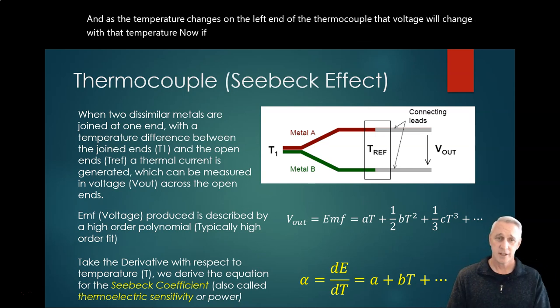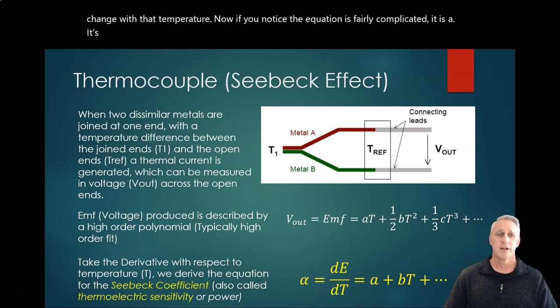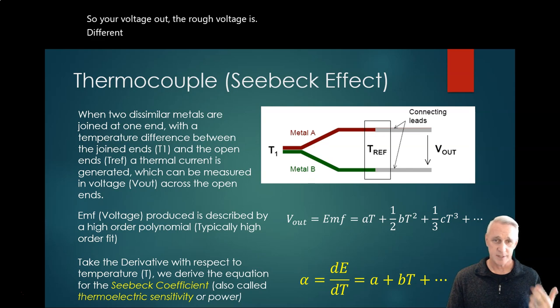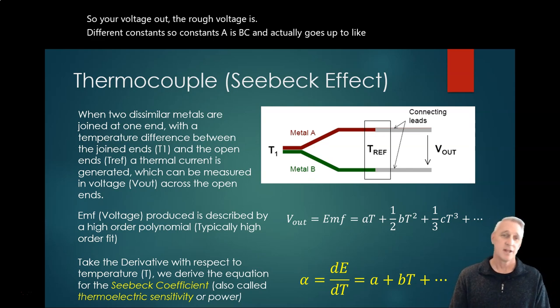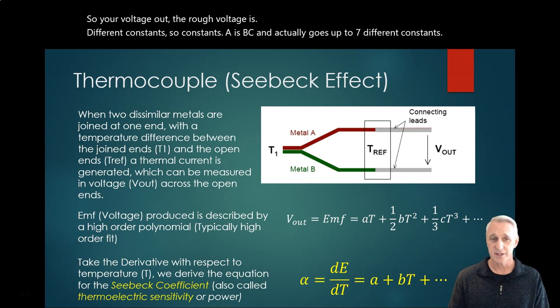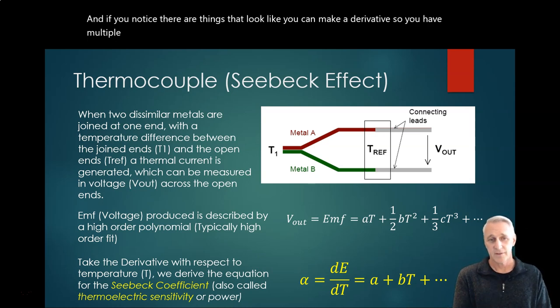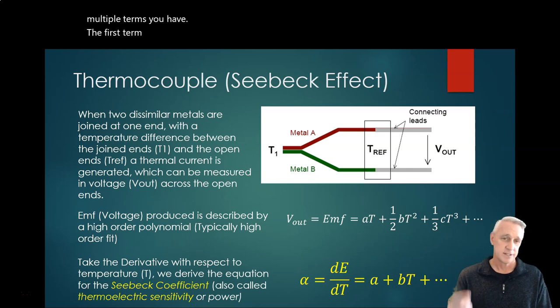Now if you notice, the equation is fairly complicated. It's a nonlinear function of temperature. Your EMF, your voltage out, the rough voltage is different constants - constants A, B, C, and actually goes up to like seven different constants. If you notice, there are things that look like you can make a derivative. You have the first term A times T, second term where you have a square term, now you have a quadratic.